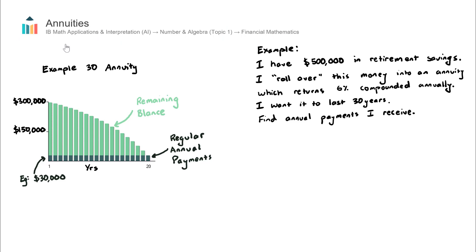This video covers annuities, which is a concept found in IB Math's AI in Topic 1, Number and Algebra, under the subtopic of Financial Mathematics.